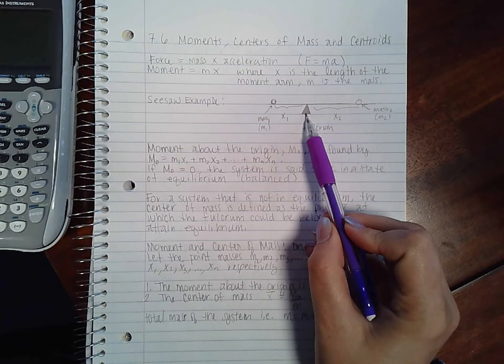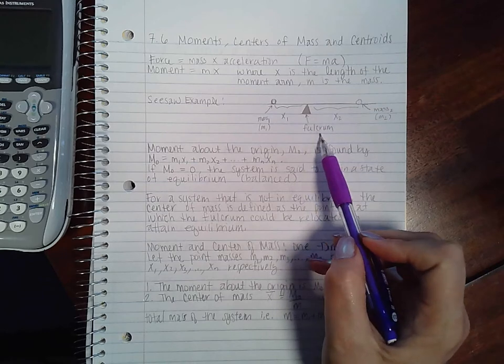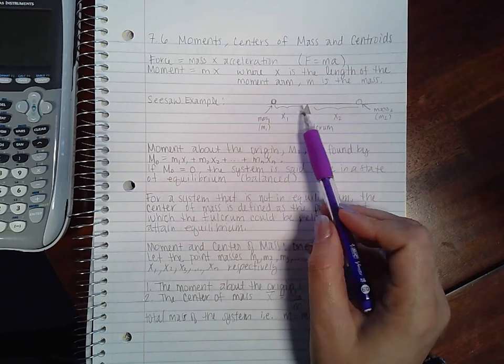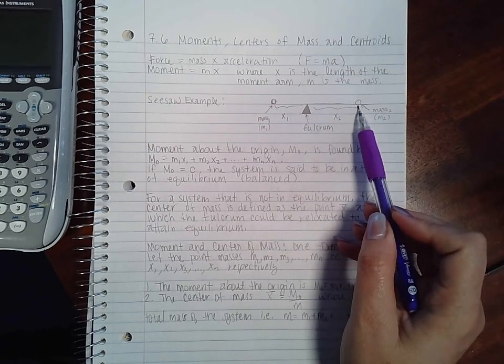The moment arm - think of like a seesaw. You have the pivotal point which is called the fulcrum, and the distance between your mass and that fulcrum is called the moment arm.